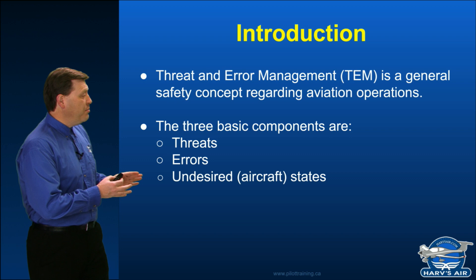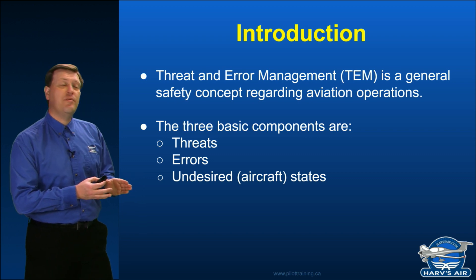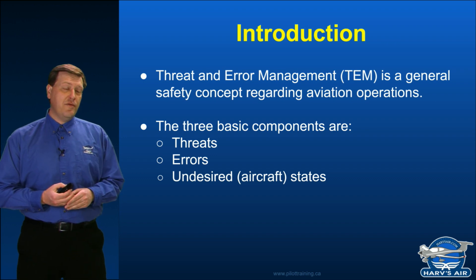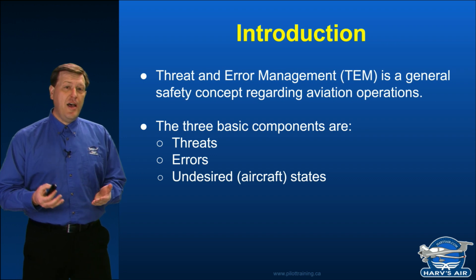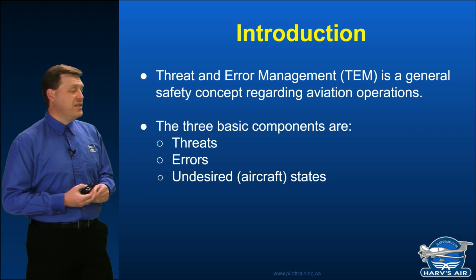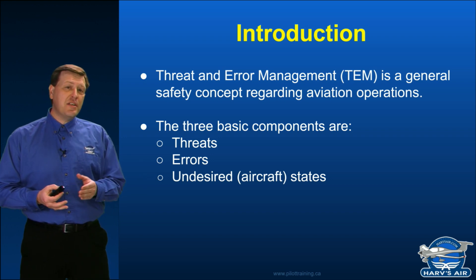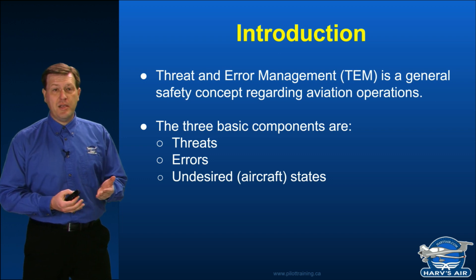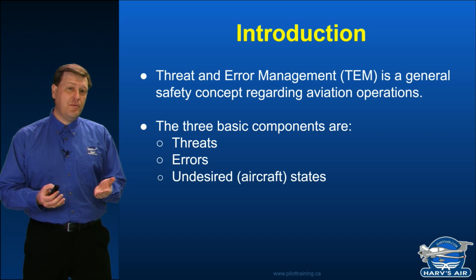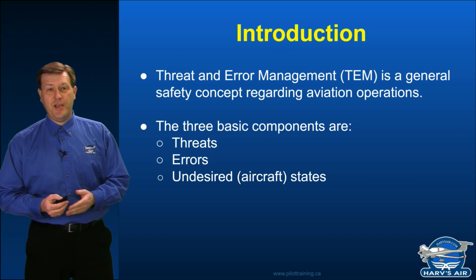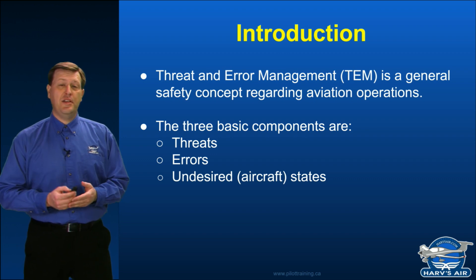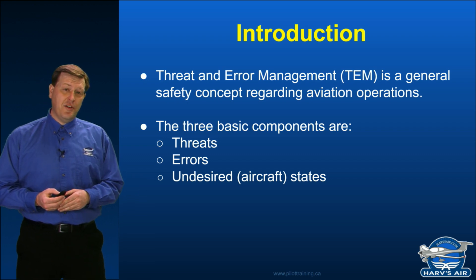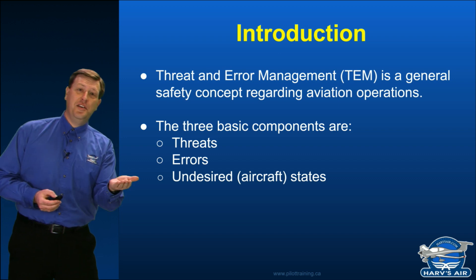This last component is typically going to be the result of these two — maybe one or the other. When we come to an undesired aircraft state, we're thinking of something that's outside of the parameters that we want as a pilot. That might be, for instance, on an approach where we have a higher than normal descent rate, or maybe an airspeed that isn't correct. Any one of those could be an undesired aircraft state — it doesn't necessarily need to be inverted.